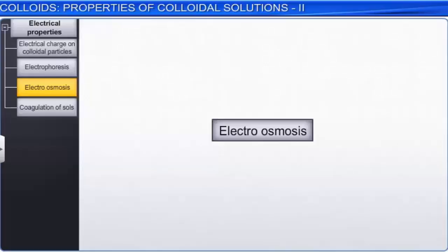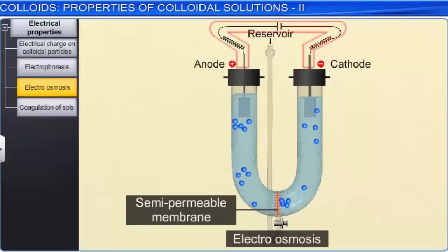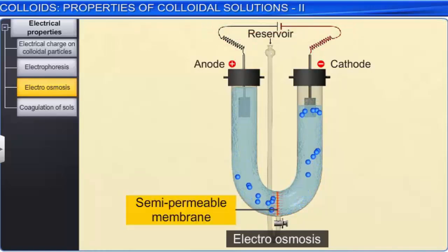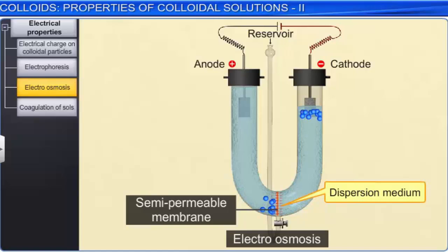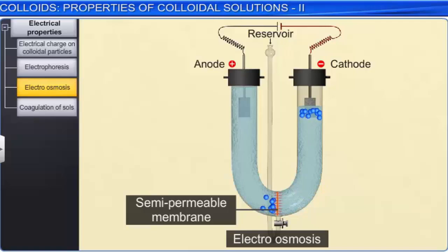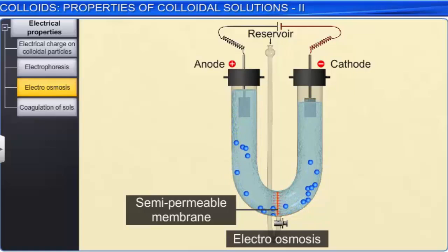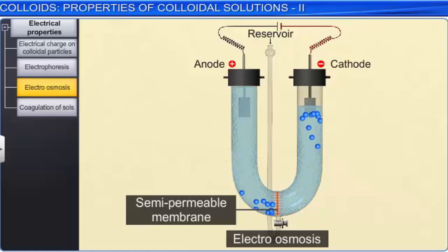Let us discuss another electrical property — electroosmosis. If an electrical field is applied to a colloidal solution and a semi-permeable membrane is used to prevent the colloidal particles from moving, then the dispersion medium moves in a direction opposite to the direction in which the colloidal particles would have otherwise moved. This phenomenon is called electroosmosis. Electroosmosis is the movement of a dispersion medium under the influence of an electrical field when the movement of colloidal particles is prevented by a suitable membrane.